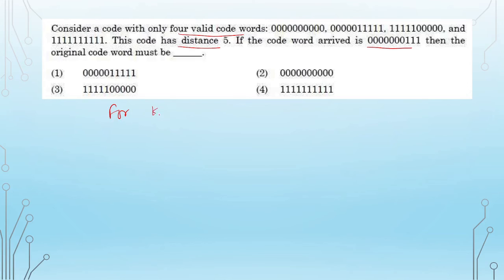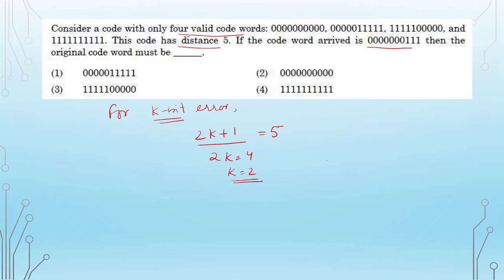For correcting k-bit errors, the minimum Hamming distance between any two code words should be at least 2k+1. Here the distance is 5, so 2k+1 = 5, giving 2k = 4, meaning k = 2. So we know 2-bit errors occurred. Now take each option's code word and perform XOR with the arrived code word. For the first option (seven zeros followed by ones), XOR with the arrived code word gives a result with two 1-bits, indicating two positions are different — a 2-bit error.